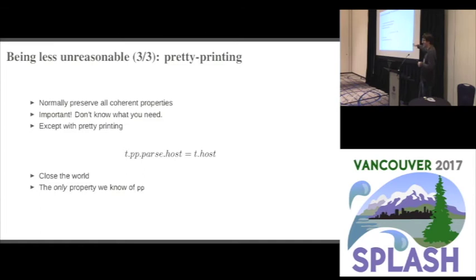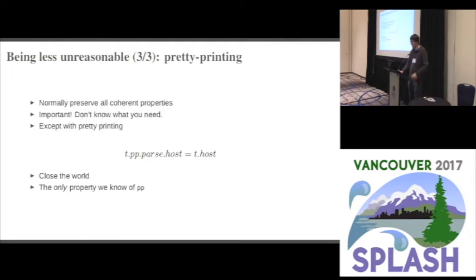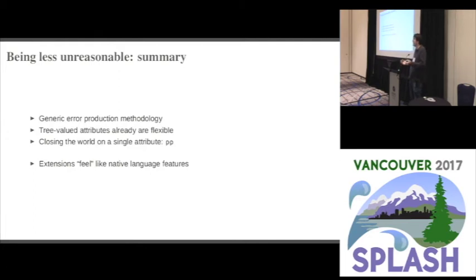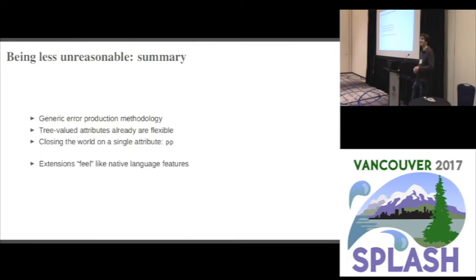Pretty printing is a very simple part of the language — something where we can completely specify everything we want to know in one equation: if I pretty print it and parse it, modulo forwarding, I get the same thing back. We can close the world and say: about this attribute, I only want to know this one thing; I don't need to preserve all coherent properties, just this one. That's the only thing we need to know about pretty printing, and this allows us to have meaningfully different values for that attribute, which means we can now make productive use of meaningfully different tree values like type representations and definition lists.